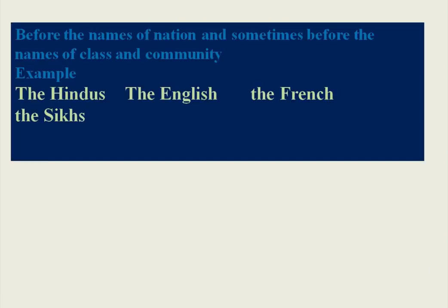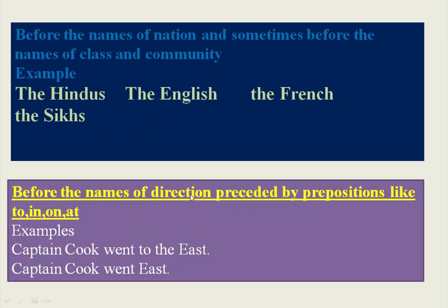We use the definite article before the names of nations and before the names of classes and communities. For example: 'the Hindu,' 'the English,' 'the French,' 'the Sikhs.' The Hindus and the Sikhs refer to communities. We also use the definite article before the names of directions preceded by prepositions like to, in, on, and at. For example: 'Captain Cook went to the east' — the direction 'east' is preceded by 'to,' so we use 'THE' between the preposition and the direction.